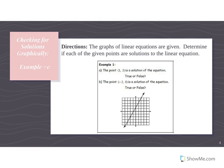For our first example, we're testing whether the point (1, 3) is a solution of the equation. Go to the right one and then up three. Make an actual point on that graph — is that point on the line? In this case it is, so we have a true statement. The point (1, 3) is a solution to our equation because it is on the line.